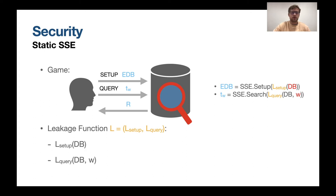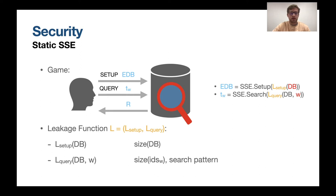For setup, the simulator only has access to the setup leakage, and for queries the simulator only has access to the query leakage. The setup leakage is the size of the database, and the query leakage is the size of the identifier set to return — the response set R, i.e., the number of identifiers matching a keyword — and also usually the search pattern, which notifies the simulator when a keyword was already queried. This query leakage is usually important in order to still be able to construct efficient schemes. After an interaction, the adversary can only learn the output of the setup leakage and query leakage.